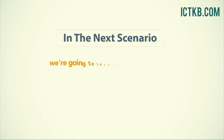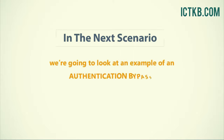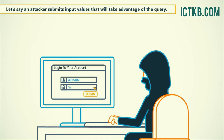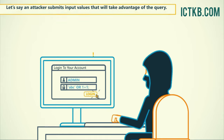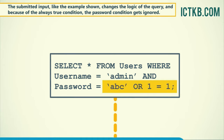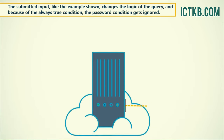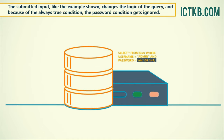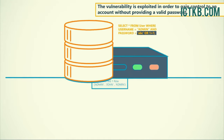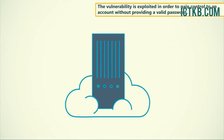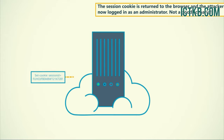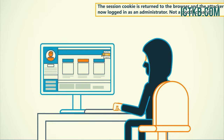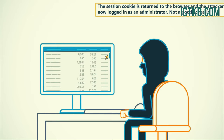In the next scenario, we're going to look at an example of an authentication bypass from a malicious SQL injection. An attacker submits input values that take advantage of the query. The submitted input, like the example shown, changes the logic of the query, and because of the always-true condition, the password condition gets ignored. The vulnerability is exploited to gain control of an account without providing a valid password. The session cookie is returned to the browser and the attacker is now logged in as an administrator.